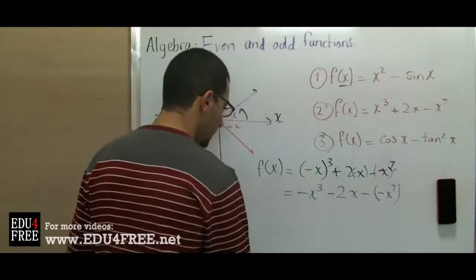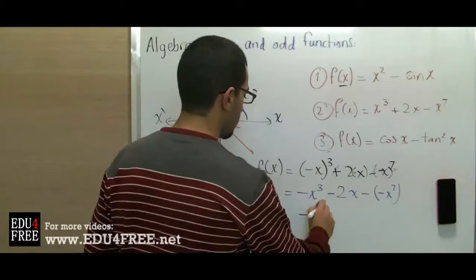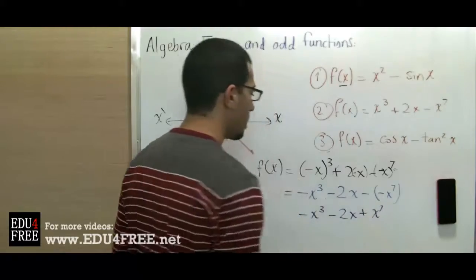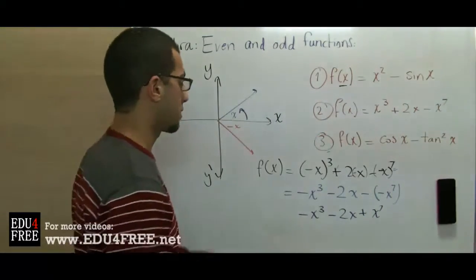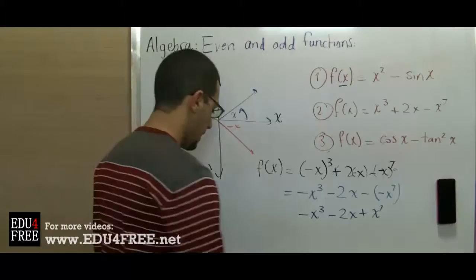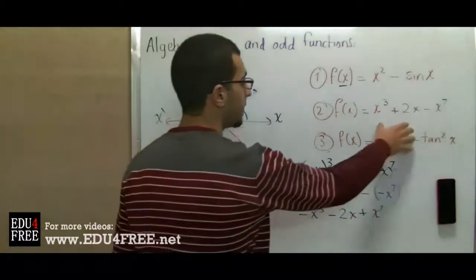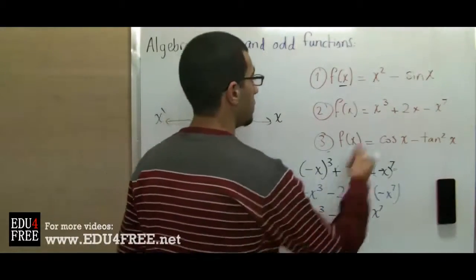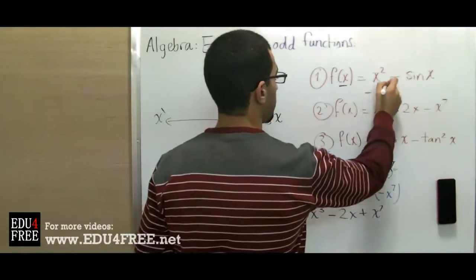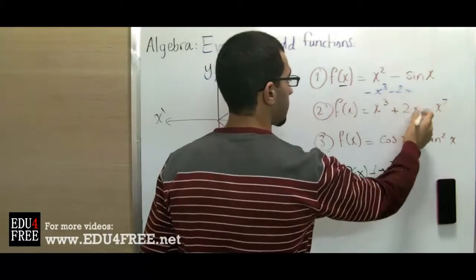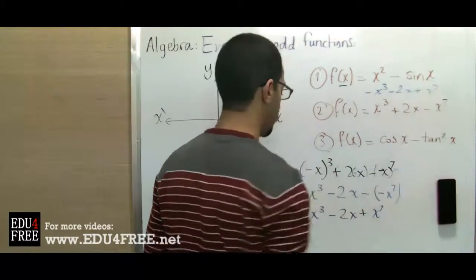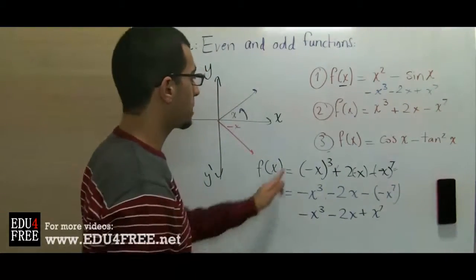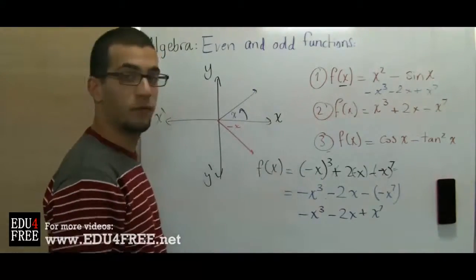So finally, we get -x³ - 2x - x⁷. This is not the same as f(x), so it is not even. But if we take the negative of f(x), we get -x³ - 2x + x⁷ — wait, this matches. So we deduce that example number 2 is an odd function.